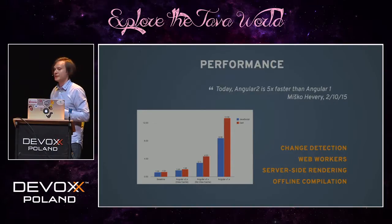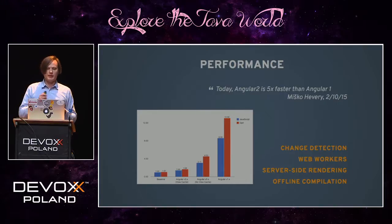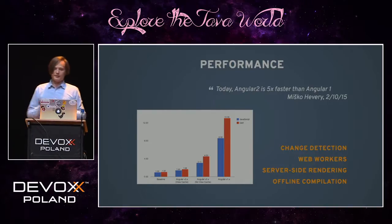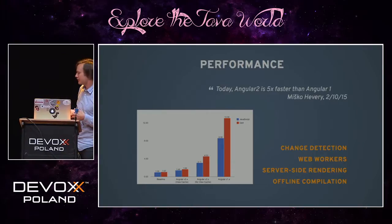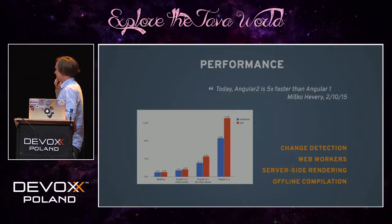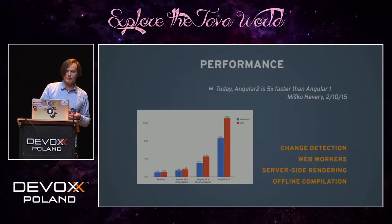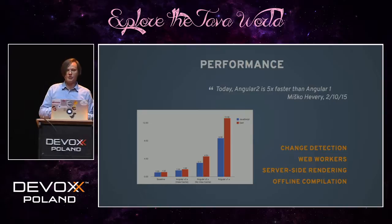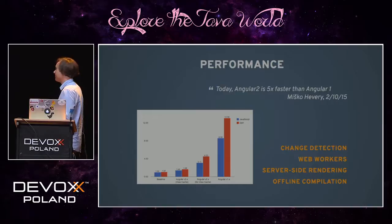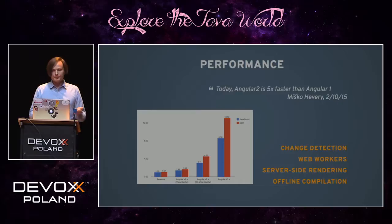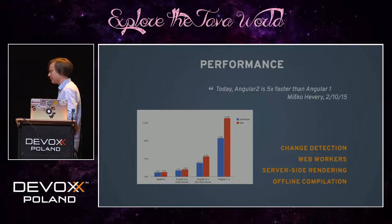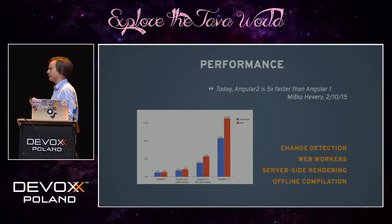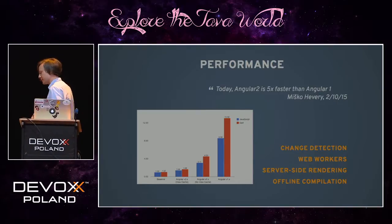The second important thing is performance. It's up to five times faster than version 1 because it has really ultra-fast change detection. Also, using modern standards, you can run Angular and almost all of your application as a web worker in parallel, in a separate thread in the browser, so your UI will always be responsive and smooth. Thanks to community support, we have Angular Universal, so we can render and run our application server-side in Node.js, and now also in .NET, with other platforms on the way.